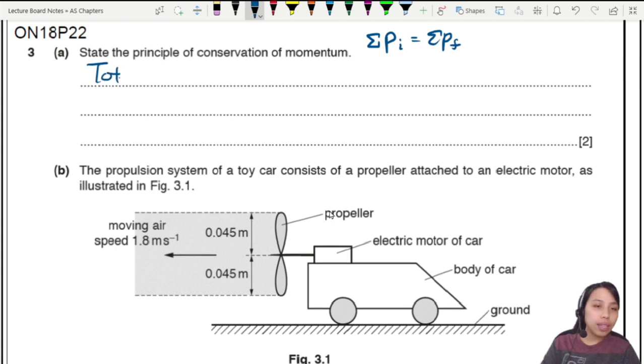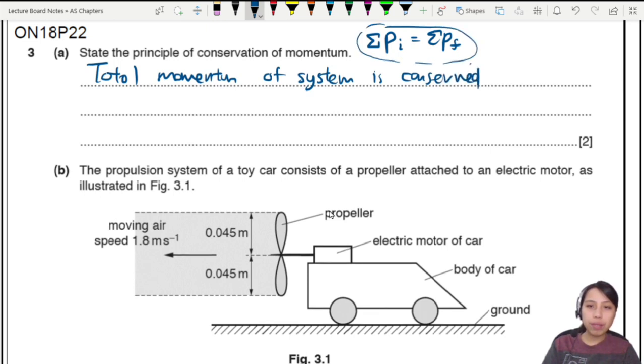So the sentence would be that the total momentum of a system is conserved. And by conserved, what I really mean is initial is same as final. There's no change. That's what I mean by conserved.